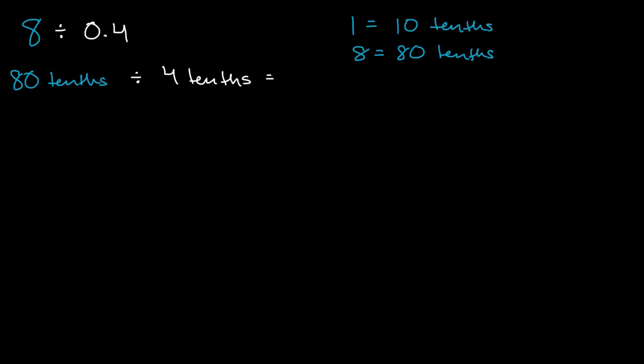Actually, let me just write it down. This is going to be equal to 80 over four, or 80 divided by four. And eight divided by four is two, so 80 divided by four is going to be equal to 20. So eight divided by four tenths is equal to 20.